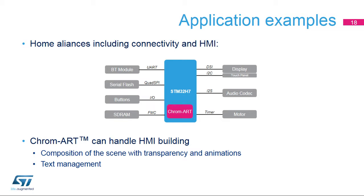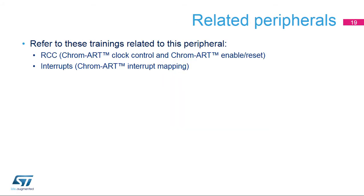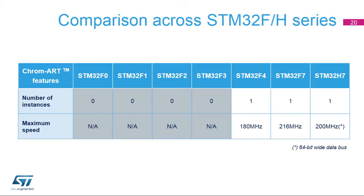The Chrom-ART accelerator is widely used in any graphical application to compute the frame buffer without any CPU load and with a very efficient throughput. It can compose the whole scene with transparency and facilitate the management of animations. Text rendering is also accelerated, making it easy and efficient to manage anti-aliased fonts. You can refer to the trainings related to the RCC and interrupts for additional information. The Chrom-ART accelerator is implemented in the STM32F4 and STM32F7 series up to 216 MHz with a 32-bit wide bus, and up to 200 MHz on the H7 series with a 64-bit wide bus.